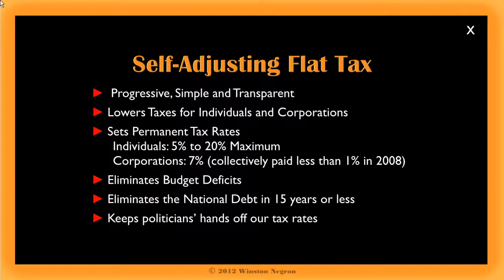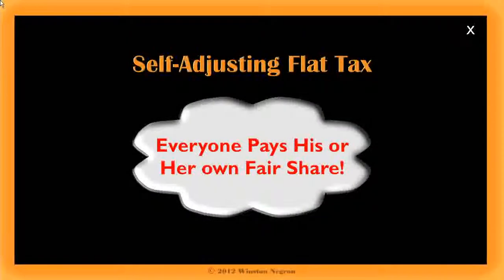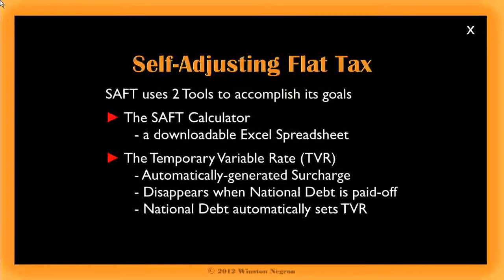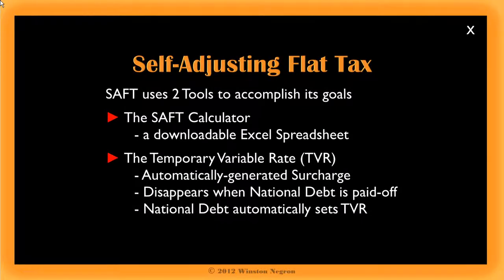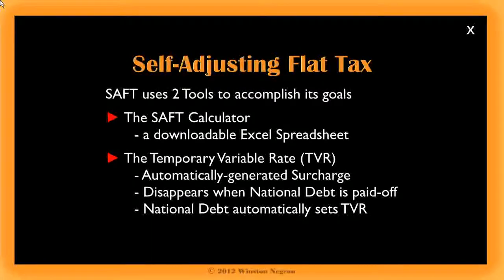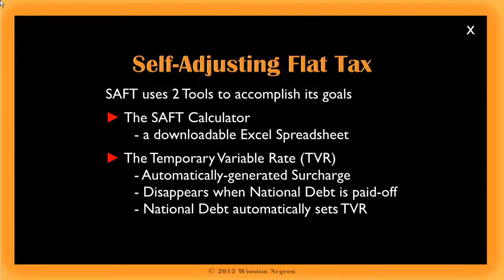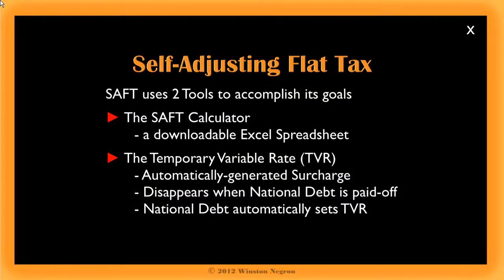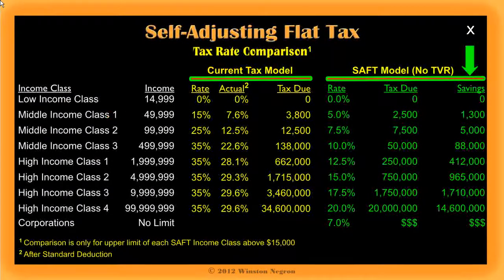How does SAFT accomplish this? The answer is simple — everyone pays his or her own fair share. SAFT uses two tools: the SAFT calculator, which is an Excel spreadsheet you can download, and the Temporary Variable Rate, or TVR, which is basically an automatically generated surcharge that will disappear once the national debt is paid off. The TVR automatically goes up and down depending on the state of the national debt. As you can see, SAFT generates lower rates and savings when compared with the current system, and these savings increase after the TVR disappears and the national debt is paid off.